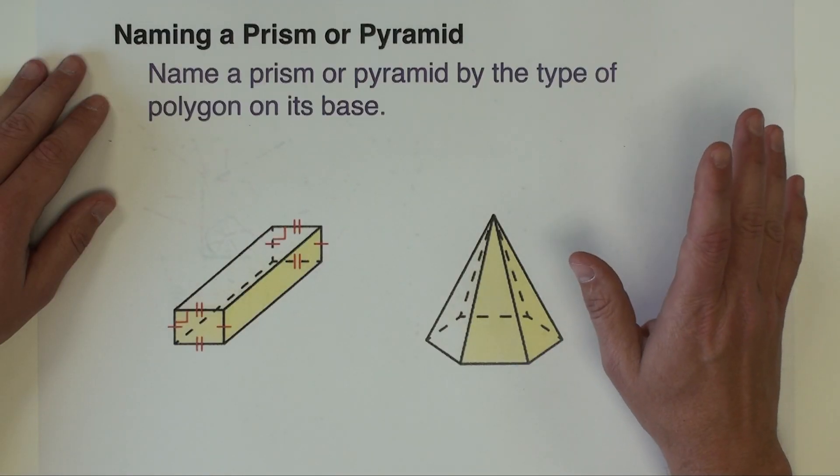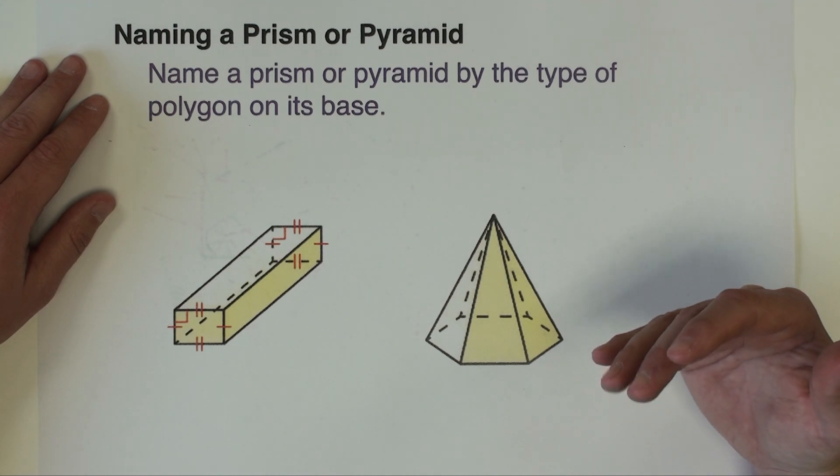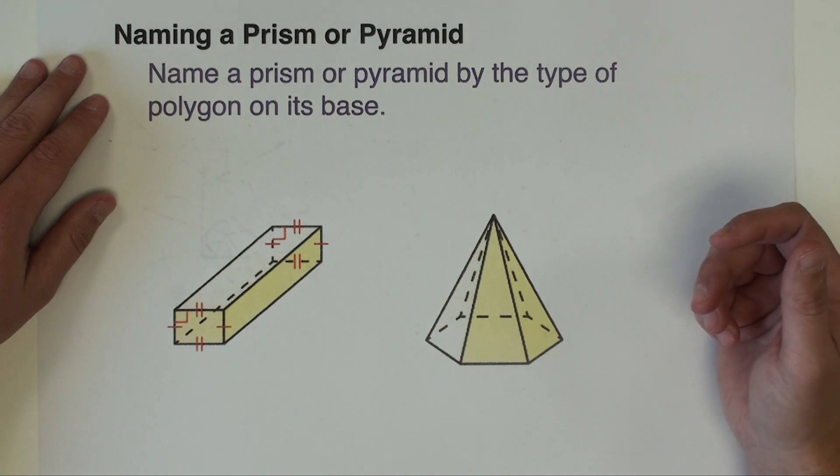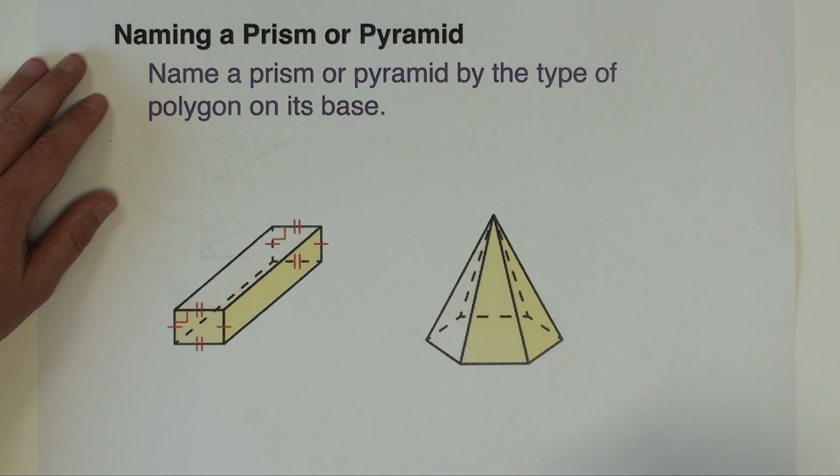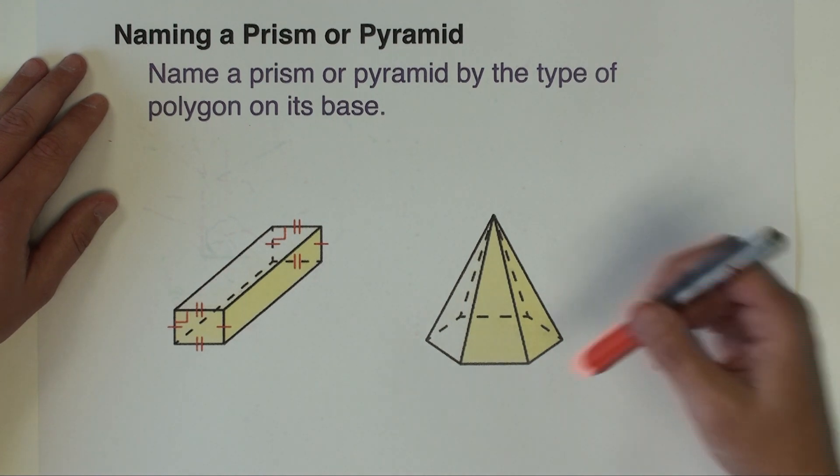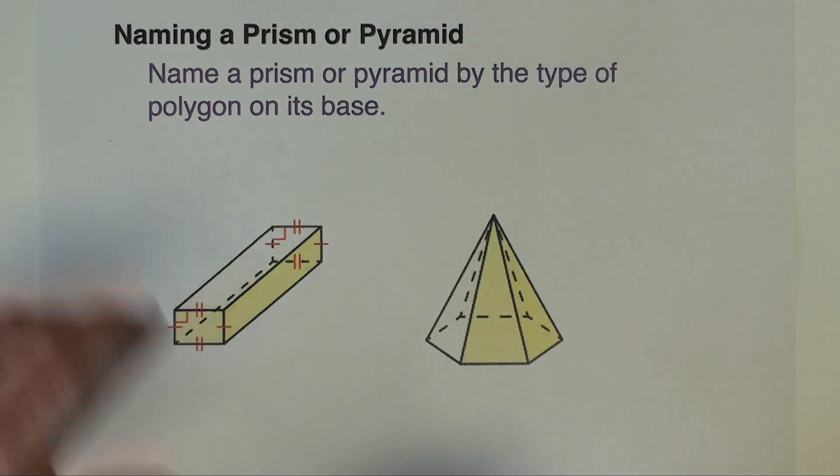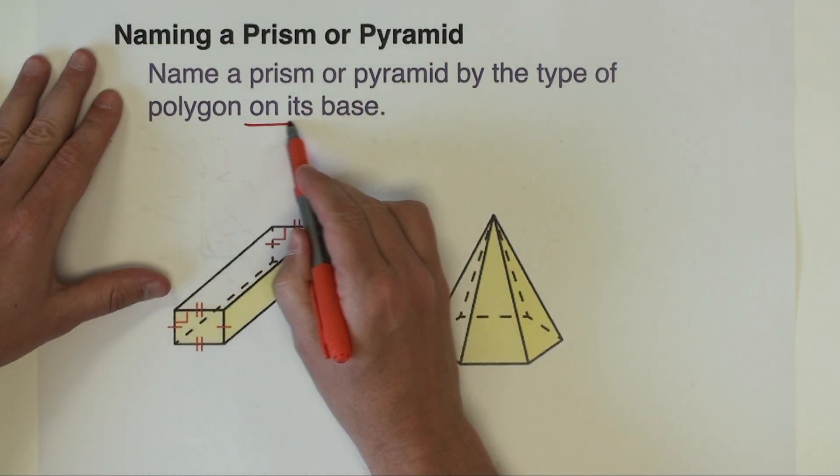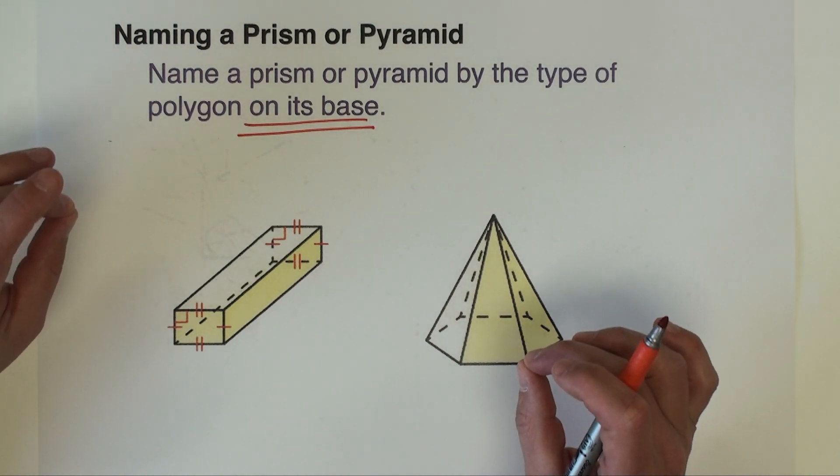All right let's talk about naming a prism or a pyramid. We all want to be using the same convention when we name a shape because when I say something, if I say rectangular pyramid you need to be able to create kind of a mental image of what that actually is. So when we name prism or pyramid we name it by the shape of the polygon on its base. Okay so you want to find the base of the polyhedron and then name it based on that shape.